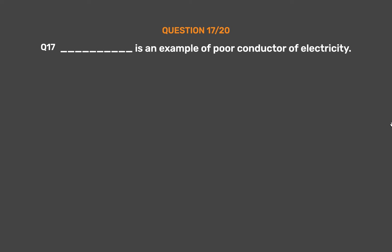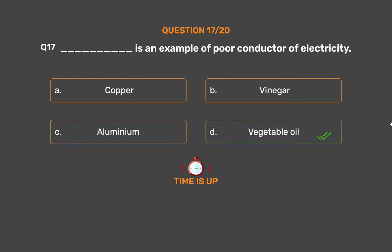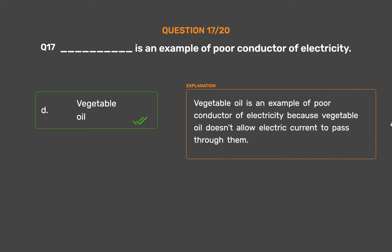Question No. 17: Underscore is an example of a poor conductor of electricity. Option A: Copper. Option B: Vinegar. Option C: Aluminium. Option D: Vegetable oil. The correct answer is Option D: Vegetable oil. Vegetable oil is an example of a poor conductor of electricity because vegetable oil doesn't allow electric current to pass through it.